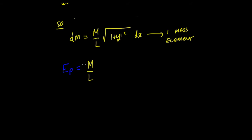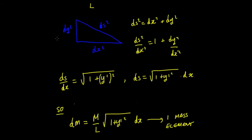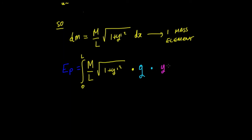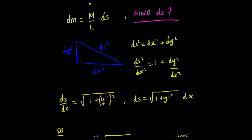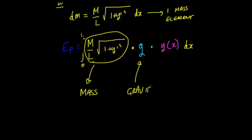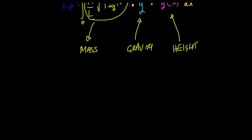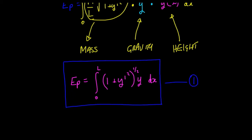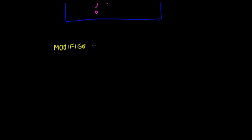To find the total potential energy, we need to integrate all those elements. We take the integral from 0 to l of dm — which is m/l times the root of (1 plus y′²) — times gravity times the height, where the height is just y(x), all with respect to dx. This gives us the three components of mgh: mass, gravity, and height. The final equation for potential energy is the integral from 0 to l of (1 plus y′²)^(1/2) times y dx, omitting the mass per unit length and gravity as fixed constants. Call that equation number 1.